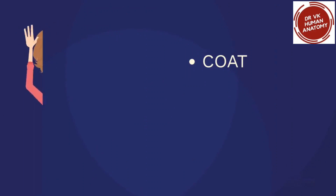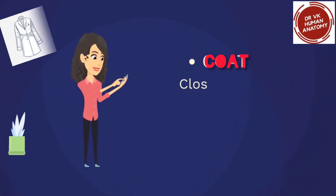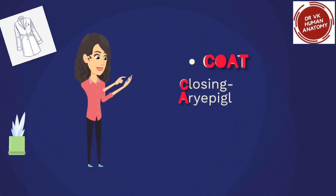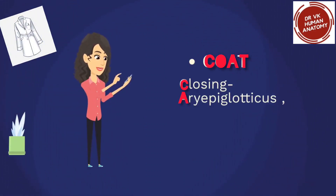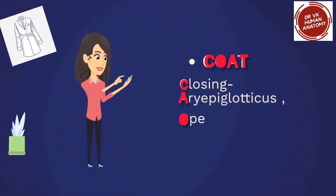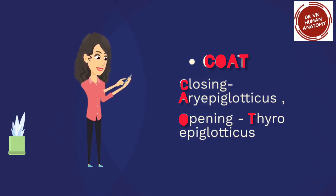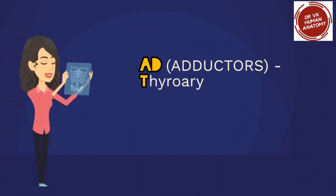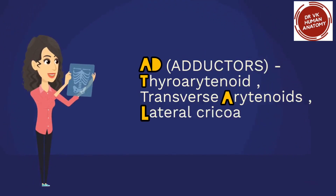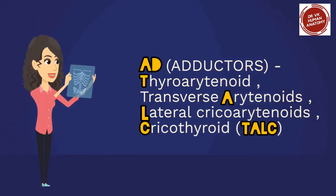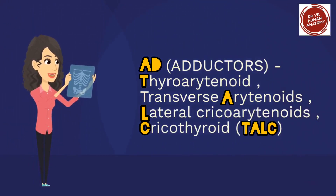'Coat' — Closing: aryepiglotticus. Opening: thyroepiglotticus. 'Add' — Adductors: thyroarytenoid, transverse arytenoids, lateral cricoarytenoids, cricothyroid — represented by 'talc' (talcum powder ad).